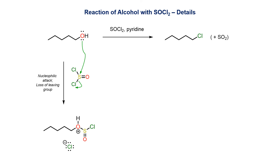In the first step, attack of the primary alcohol on the electrophilic sulfur of thionyl chloride causes displacement of a chloride ion as a leaving group. This forms the protonated sulfonyl chloride intermediate.